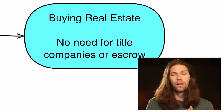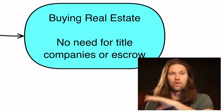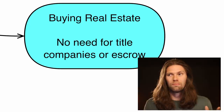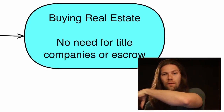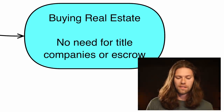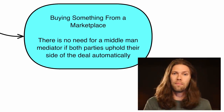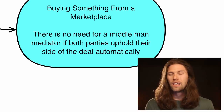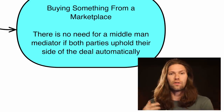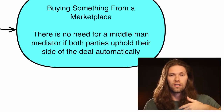Buying real estate: you could theoretically buy real estate with a smart contract, doing away with the need for any payment to transfer a title because it would happen automatically. Escrow would basically go away altogether — there's no need for escrow if you have a smart contract. It's simply an if-then statement: if you pay this much money, then the deed for the house gets transferred to your name.